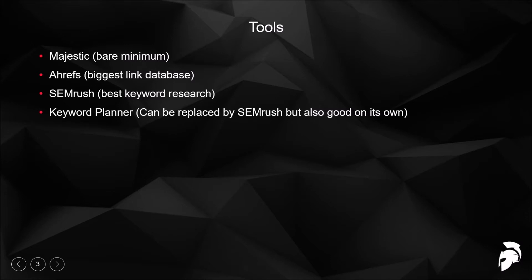With Majestic you can see which links have higher trust flow and which don't. The higher trust flow ones you'll want to manually check to make sure they're legitimate, but you can usually see what links are worth copying and what links the competition has in general.